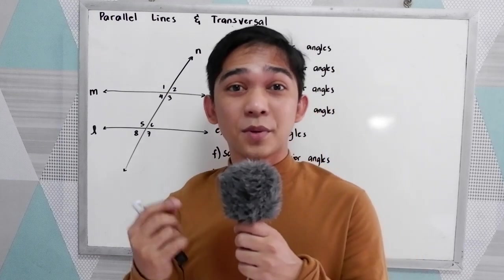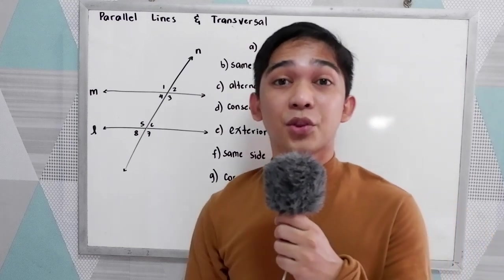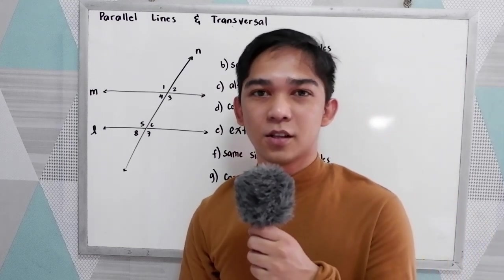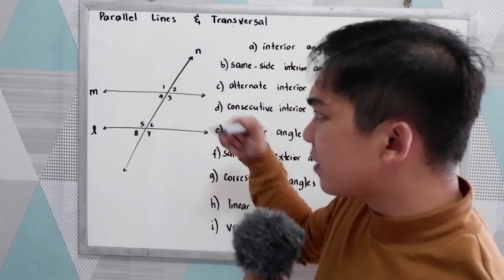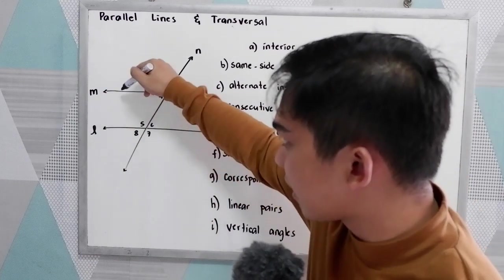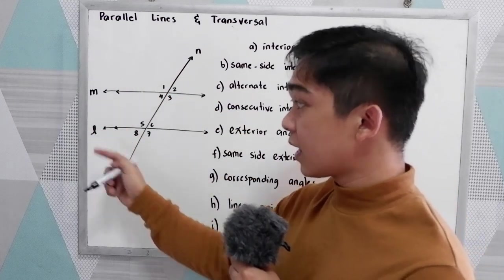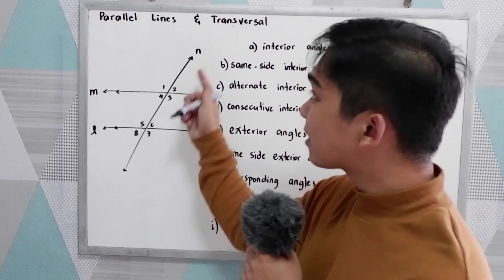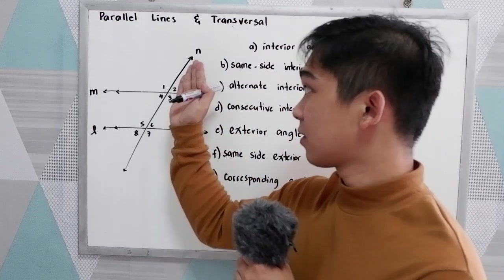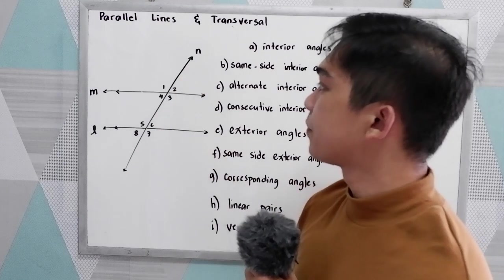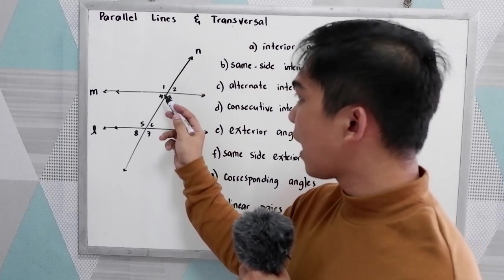Good day everyone. Today I will be discussing parallel lines cut by a transversal. So let's say we have parallel lines M and L, cut by a transversal N. Then we have the following angles.